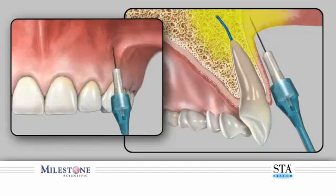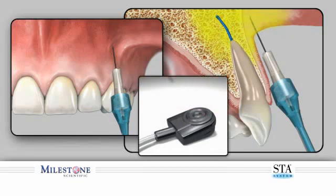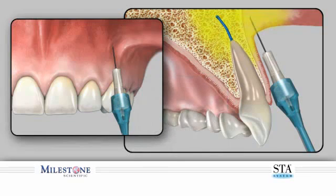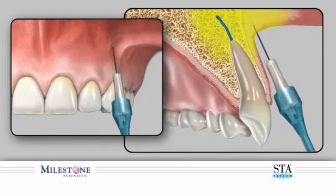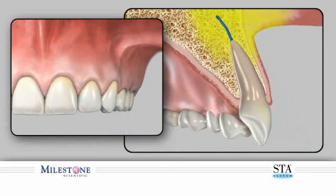When you have delivered the required dosage, you can remove the needle. To avoid anesthetic solution spray back into the patient's mouth, perform the following: while the needle is still embedded in patient tissues, depress and release the foot control pedal. Count three beeps after releasing the foot control, and then remove the needle from within the patient's mouth. Direct the needle away from the patient, as a small amount of anesthetic solution may still be present.